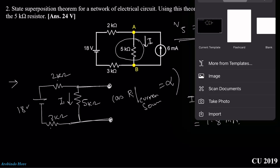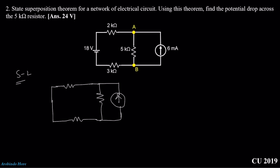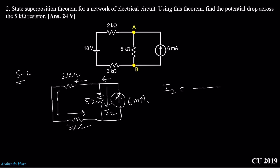Next, step two: draw the circuit with only the 6 milliampere current source. The voltage source is replaced by a short circuit. With 2 kilo ohm, 5 kilo ohm, and 3 kilo ohm in the circuit, we apply the current division rule to find I2 through the 5 kilo ohm branch. The opposite resistance is 2 kilo ohm plus 3 kilo ohm equals 5 kilo ohm. So I2 equals 5 kilo ohm divided by the total 10 kilo ohm, multiplied by 6 milliampere — giving I2 equals 3 milliampere.